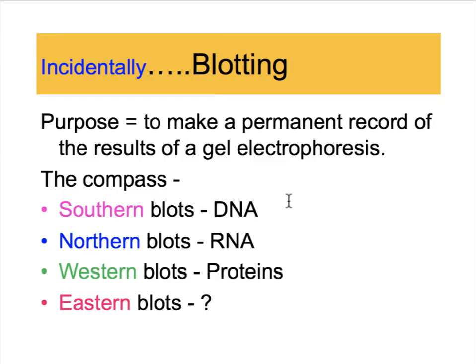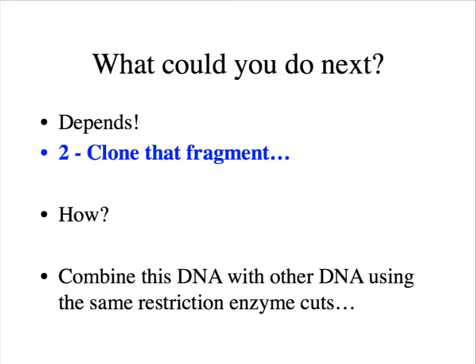Other techniques have since been developed based on similar procedures but utilizing different types of starting material. Southern blots are reserved for DNA analysis, Northern blots for RNA analysis, and Western blots have been used for separating and detecting proteins. There is no such thing as Eastern blots at the moment, but it would be nice to complete the compass based on Southern's name. Once you have identified a fragment of DNA in the gel using a probe, one common strategy is to clone that fragment.